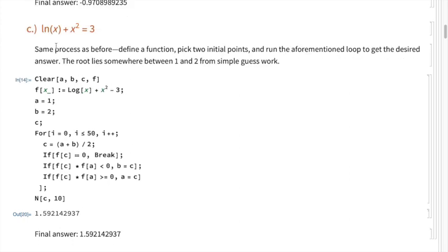Problem c: natural log of x plus x squared equals 3. Same process as before — nothing new here. We define our function as ln(x) + x² - 3, evaluate it for values near zero, and find that the root lies somewhere between 1 and 2. We define a third variable, run the calculations a grand total of 50 times, and get a final answer of 1.59214.